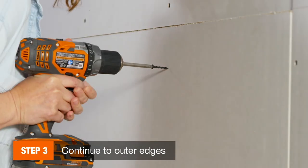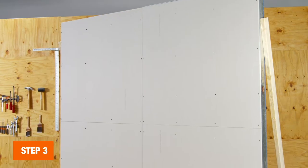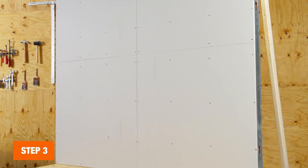Then work your way from the center to the outer edges of the panel, driving screws 16 inches apart into all studs. Repeat this process when hanging additional sheets of drywall.